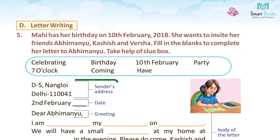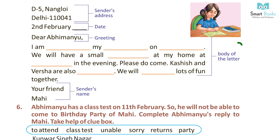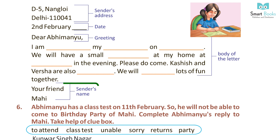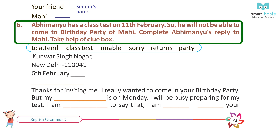D-5, Nangaloi, Delhi - 110041. Date: 2nd February. Dear Abhimanyu, I am celebrating my birthday on 10th February. We will have a small party at my home at seven o'clock in the evening. Please do come. Kashish and Warsha are also coming. We will have lots of fun together. Your friend, Mahi. Sender's name: Abhimanyu.